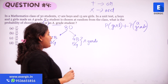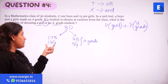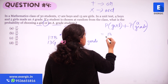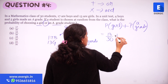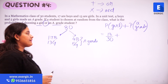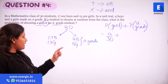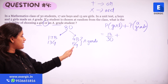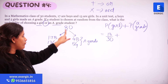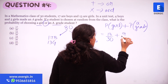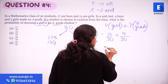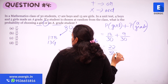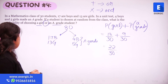So how many girls are there? The total number of girls is 13, so the probability of selecting a girl out of these 30 students is 13 by 30. What about A grade? How many A grade students are there? Total number of A grade students are 4 plus 5, which is 9. So selecting 9 out of 30, we have 9 by 30. This gives us 22 by 30, which is option number D.